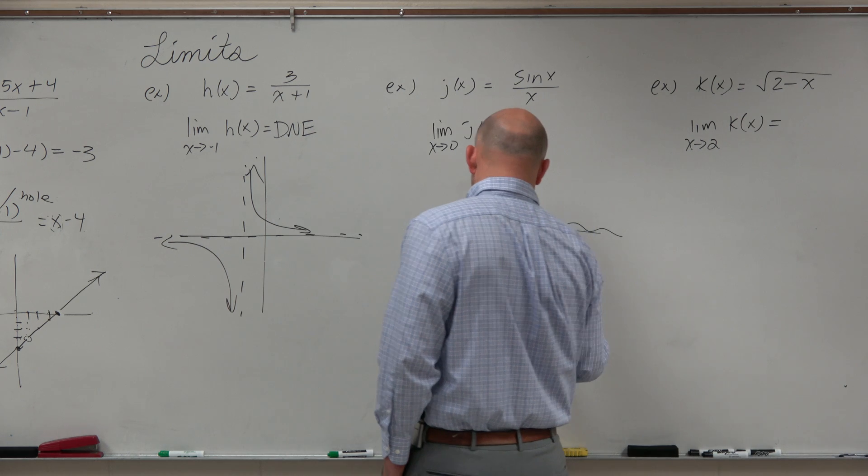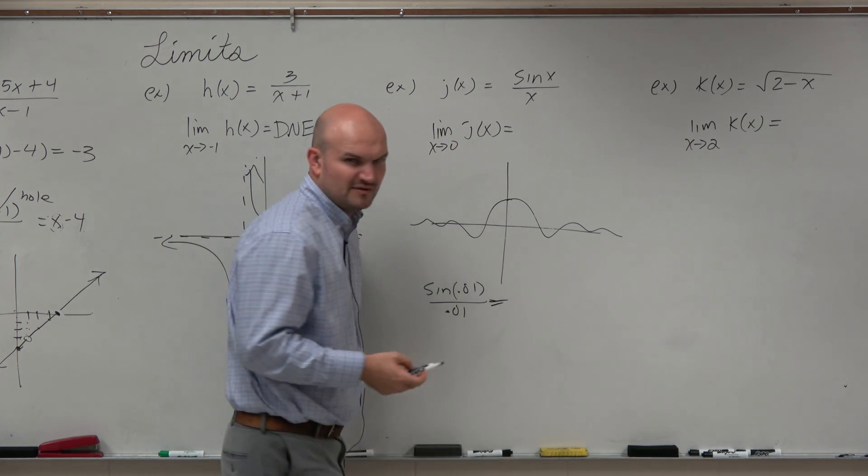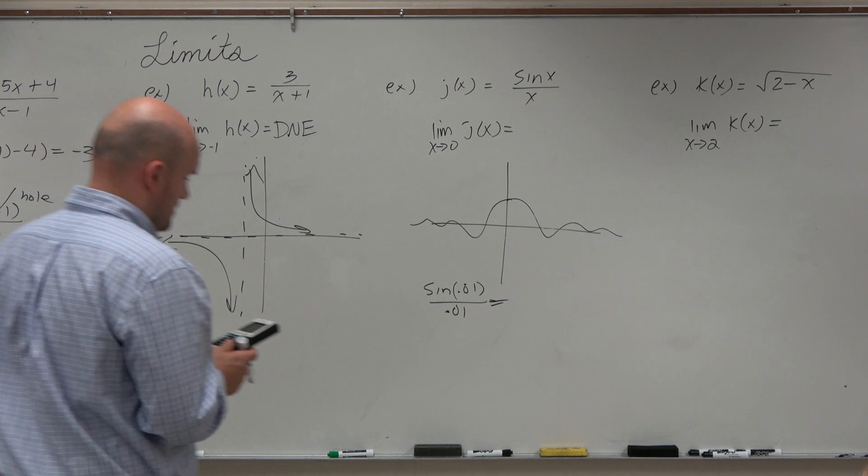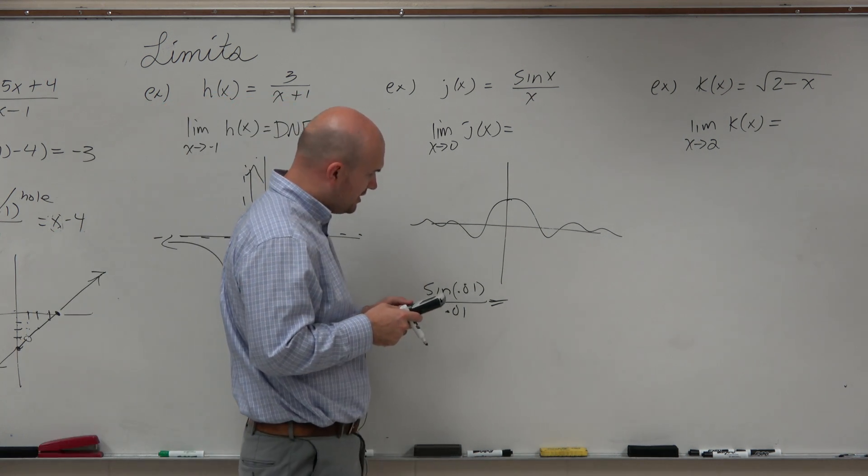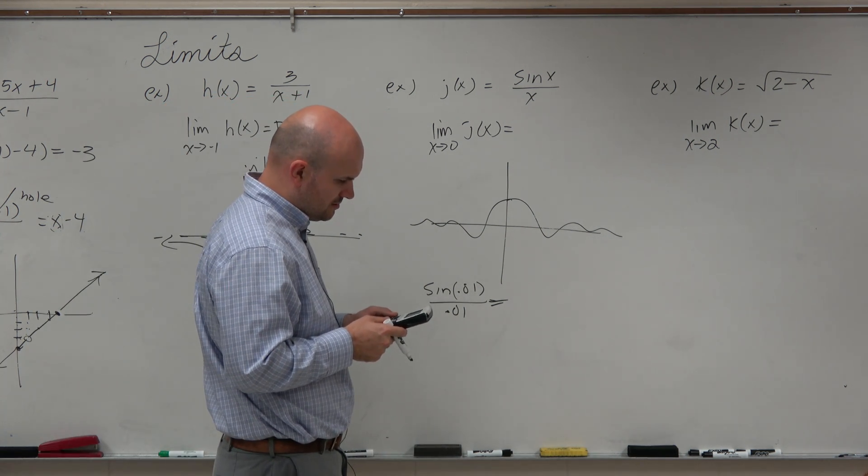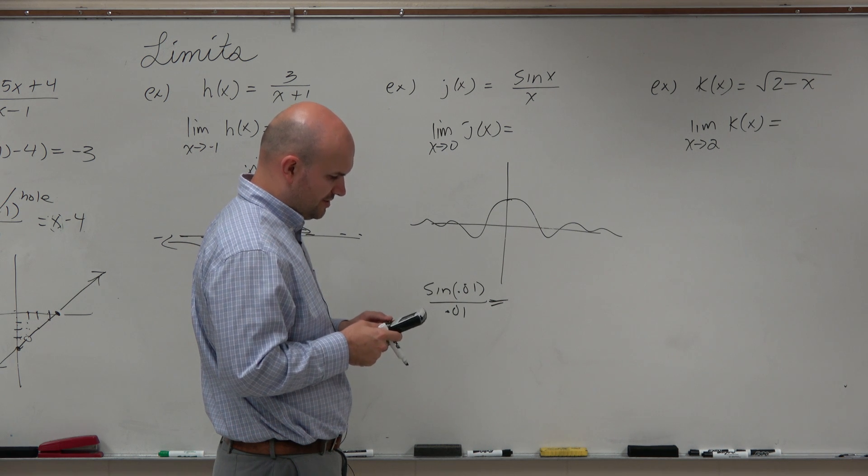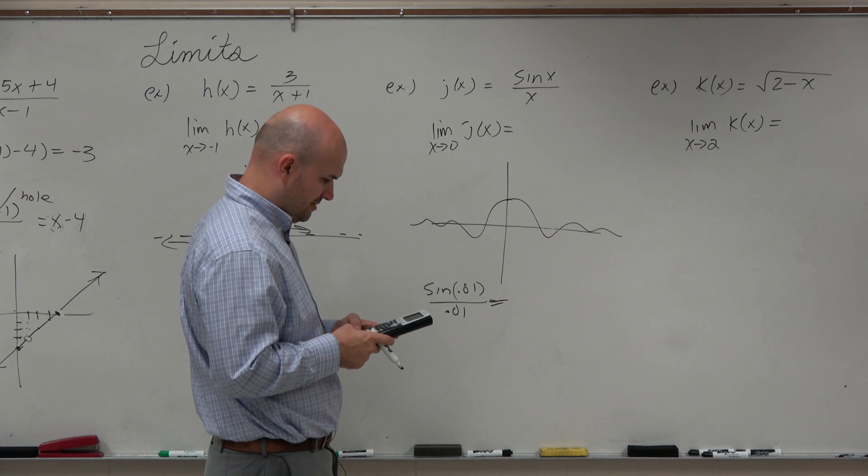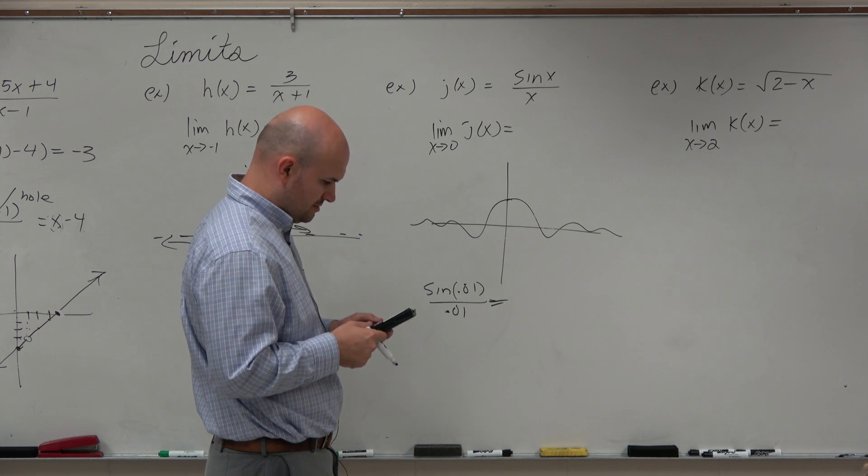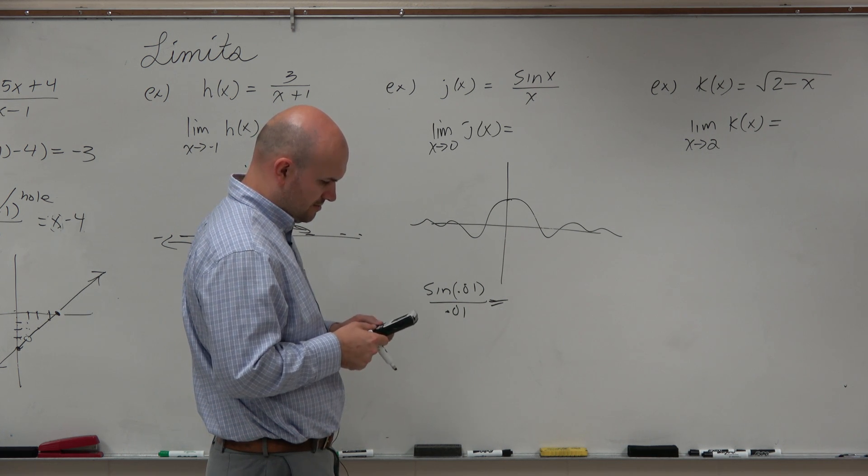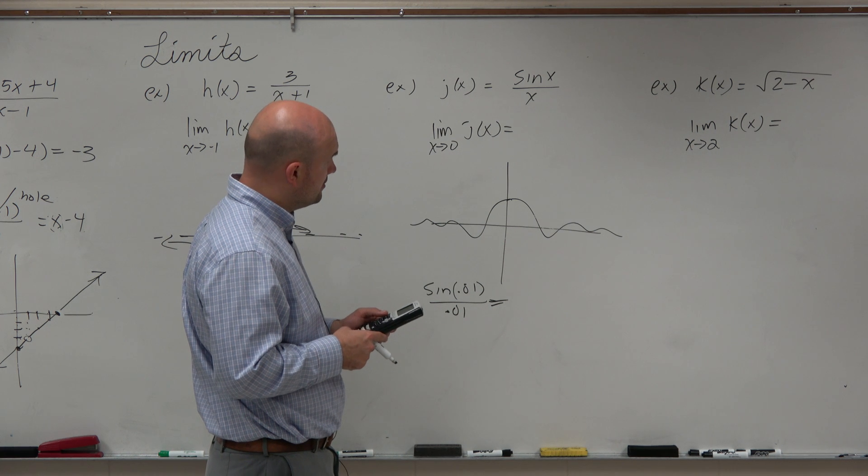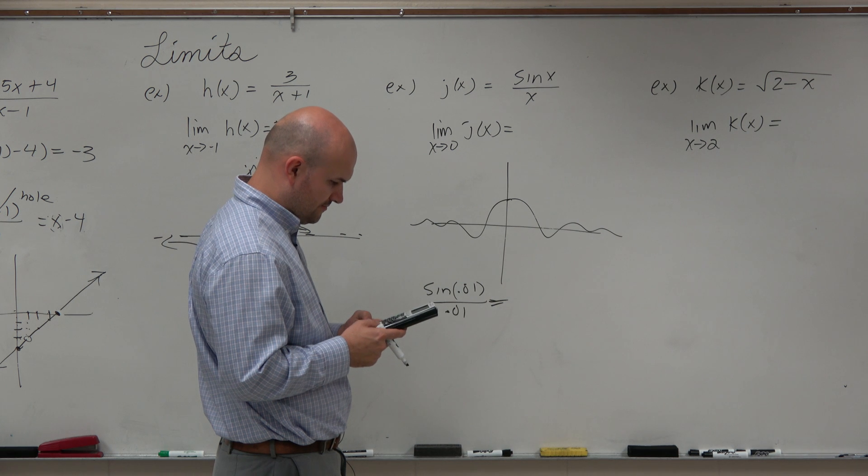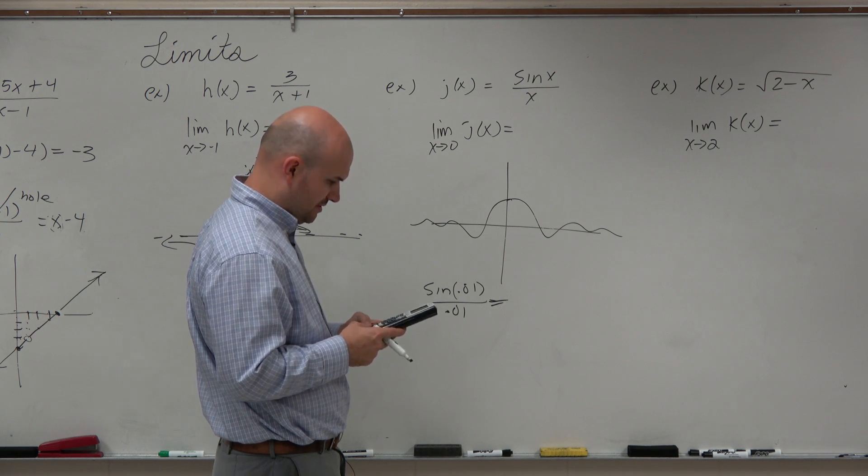And I don't know what the answer is. But actually, could somebody do that? Because I'm going to use your calculator. Let's just go through it. Make sure, what? Yes, I stole your calculator. Sine of 0.01 divided by 0.01. Mode. So we could do sine of 0.01 divided by 0.01.